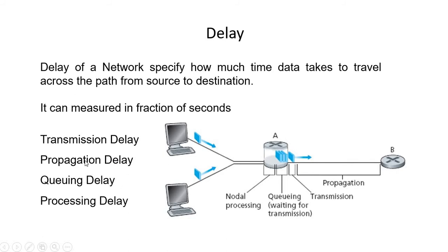Propagation delay is the actual time to travel between one point and another point. Suppose data packets start travelling from router A and reach router B. Whatever time is taken by the data packets to travel from point A to point B, that time is measured as propagation delay.